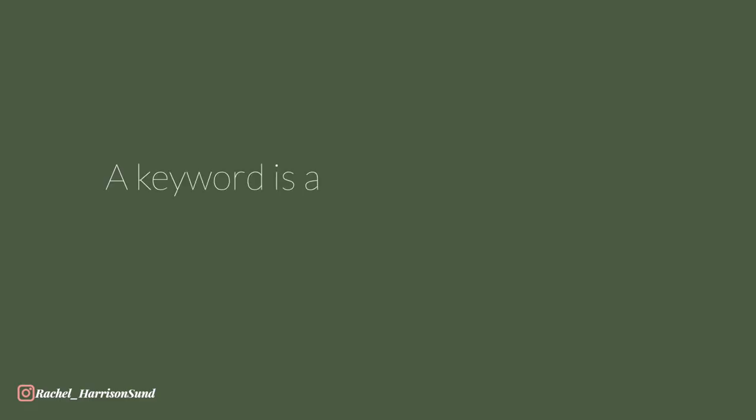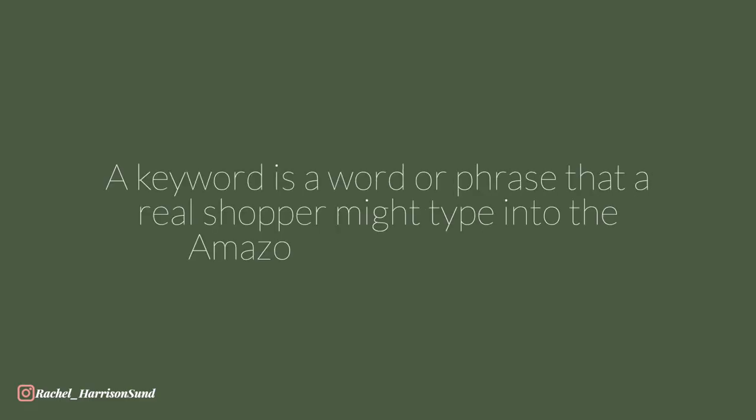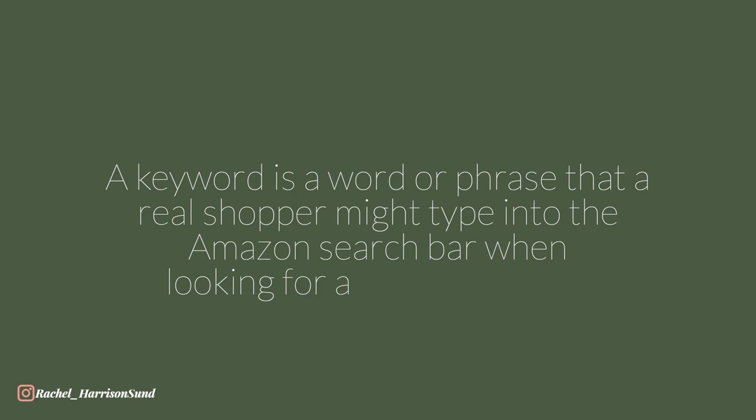If you just need some guidance on how to come up with ideas to begin with, you can check out this video right here. So before we get going on validating your idea, you're going to come up with a list of keywords that relate to that initial idea. A keyword is just a word or a phrase that a real shopper would type into Amazon's search bar when they're looking for a book like yours.